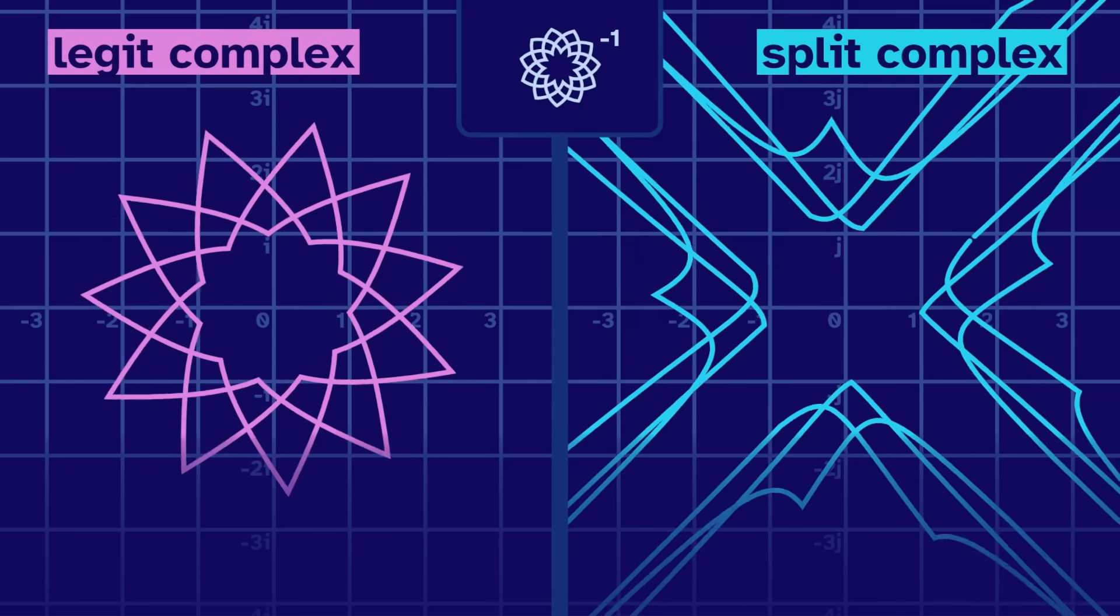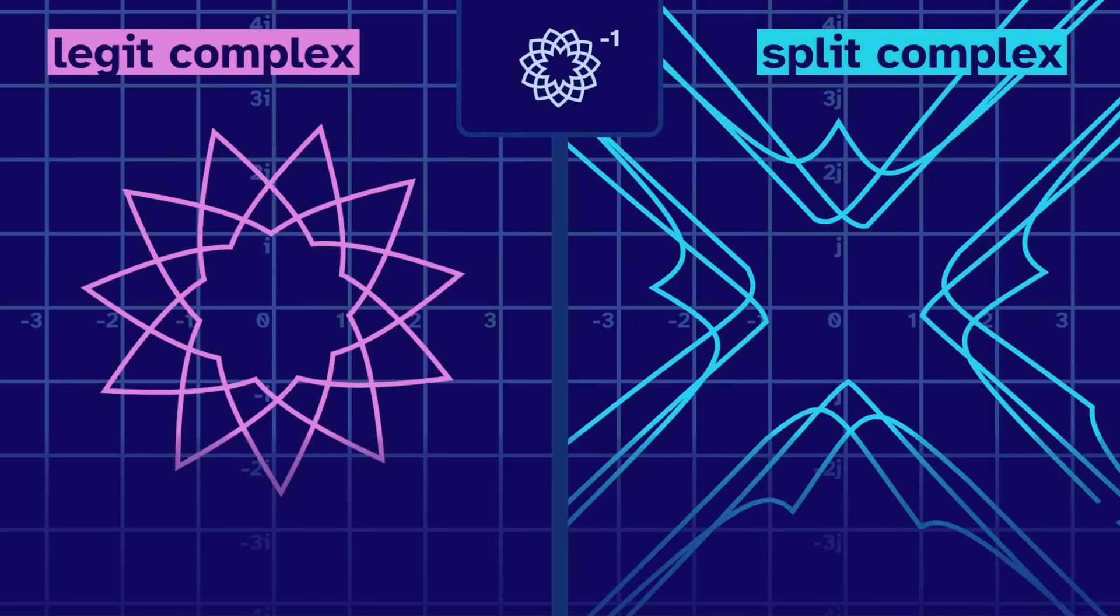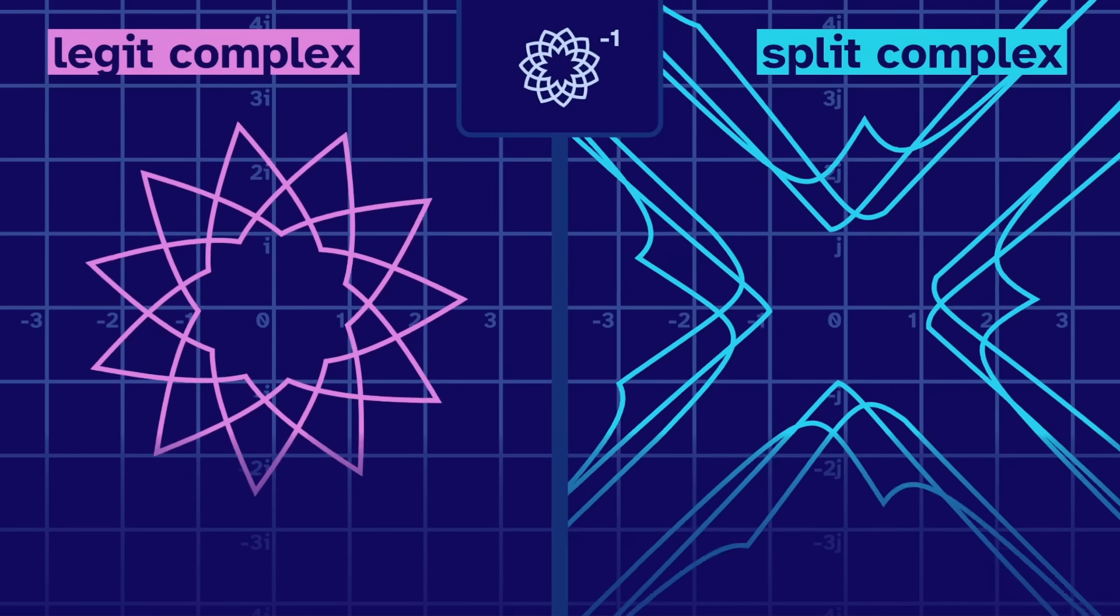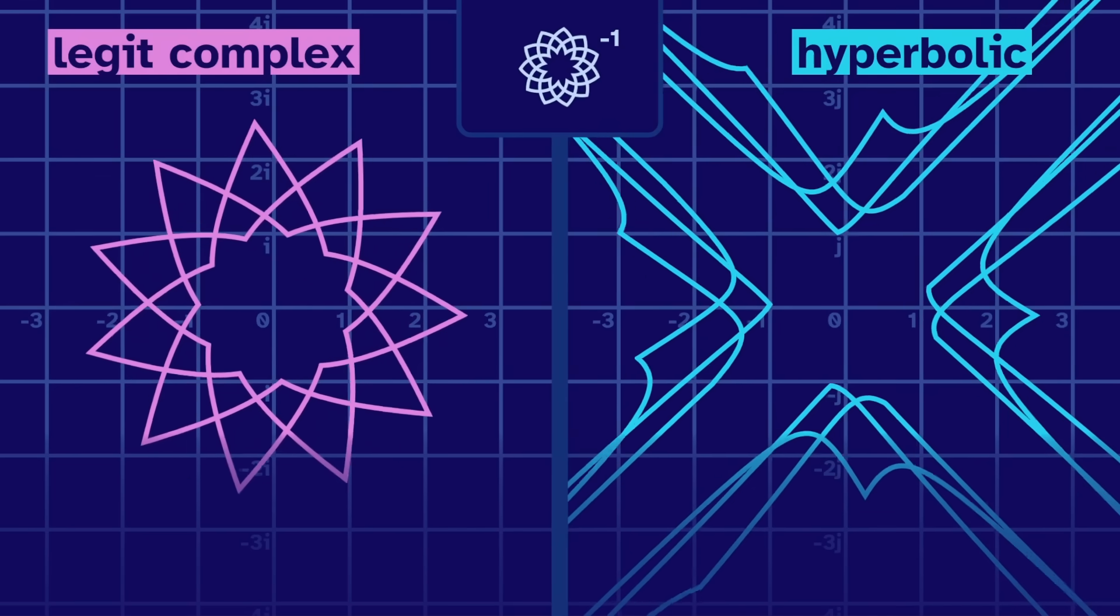So as the inputs approach the diagonal, their inverses approach diagfinity. This is another good demonstration of why the split complex are called hyperbolic numbers.